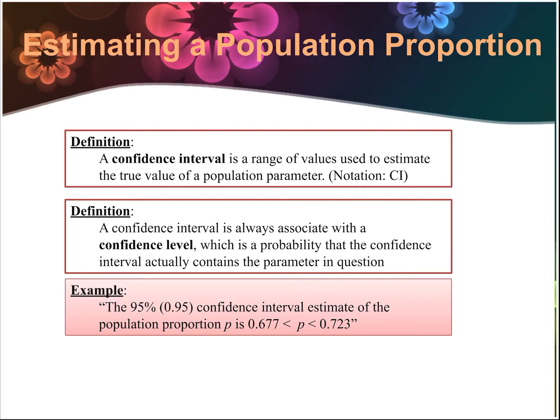For example, the 95% or 0.95 confidence interval estimate of the population proportion p is 0.677 to 0.723. This means that of all of the samples that we would take, 95% of them should contain the actual population proportion — the true p — as long as the interval is between 0.677 and 0.723.